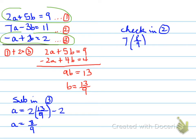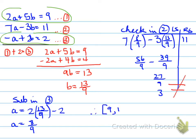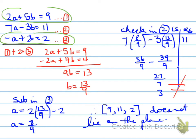We check by substituting A and B into equation 2. When we check, the left side does not equal the right side. Because of that, this vector does not lie on the plane, and therefore the three vectors do not lie in the same plane — they are not coplanar. Hopefully this makes sense. This is the end of the video. Have a great night, take care.